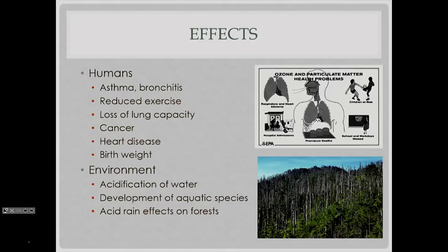In the environment, these pictures here show acid rain. It'll acidify the water as it falls from the sky, which then inhibits aquatic species and also has effects on forests if they're subjected to significant amounts. So it's a connection between air quality and water quality.